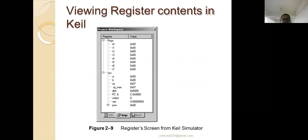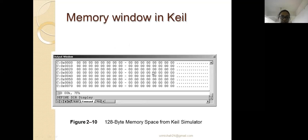This is the workspace of Keil software. The Keil simulator, which you may have used for 8085, can also be used for 8051. The window shows the output of registers during program compilation and running. The output window displays the final output generated at specific addresses or locations, using a 128-byte memory space.